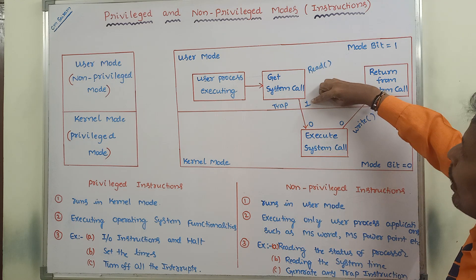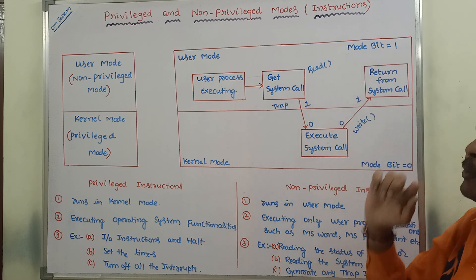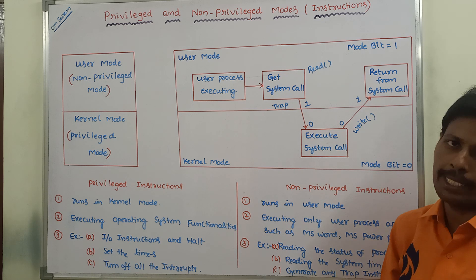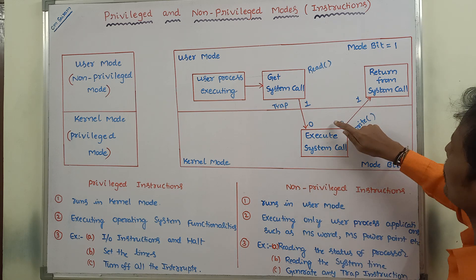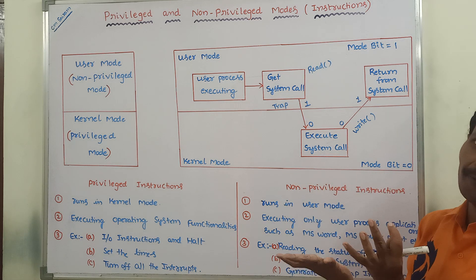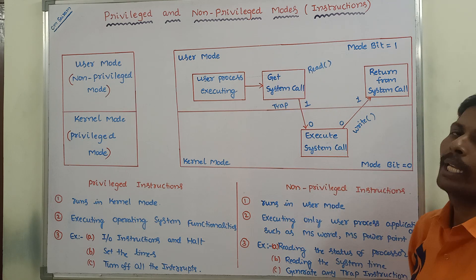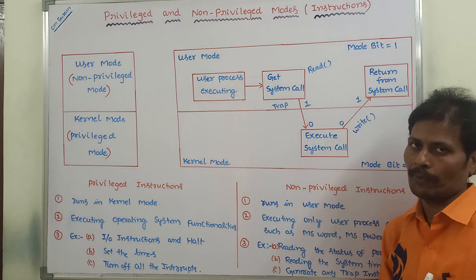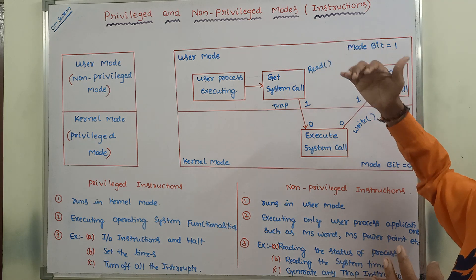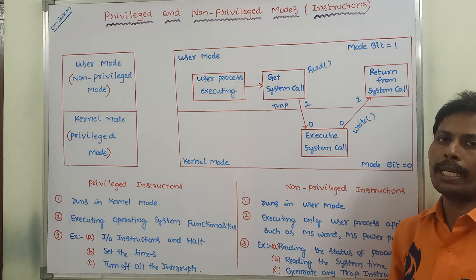Changing from user mode to kernel mode is changing the mode bit value from 1 to 0. Changing the mode from kernel mode to user mode is changing the mode bit value from 0 to 1. The process of switching from user mode to kernel mode is called context switching — that means changing the mode bit value from 1 to 0 and 0 to 1.